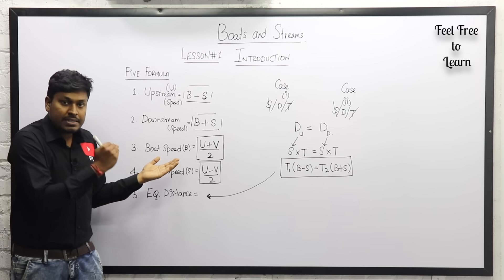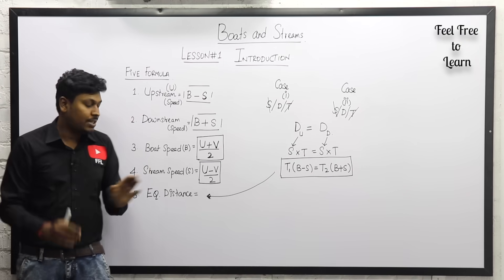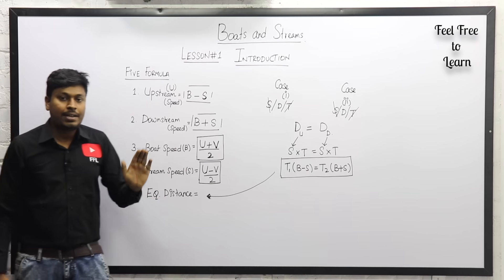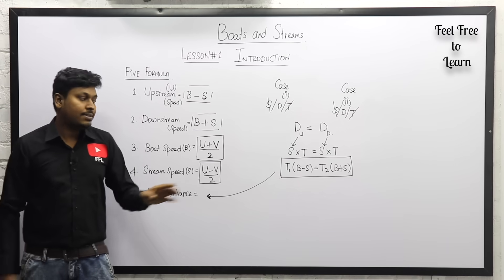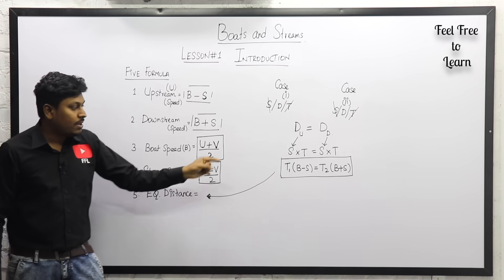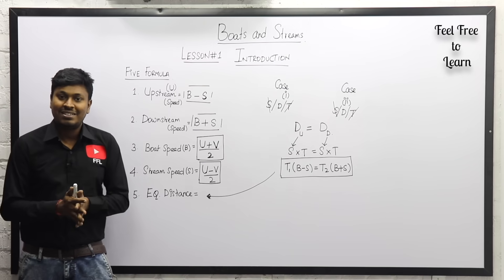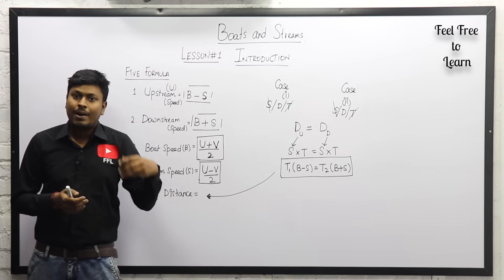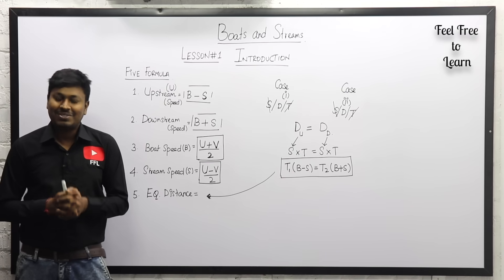To recap: upstream means against the stream — subtract speeds (B - S). Downstream means along the stream — add speeds (B + S). Given upstream and downstream speeds, boat speed = (U + D) / 2 and stream speed = (U - D) / 2. Equating distance gives T1(B - S) = T2(B + S). In lesson two, we will solve many basic questions on Boats and Streams. Thank you!